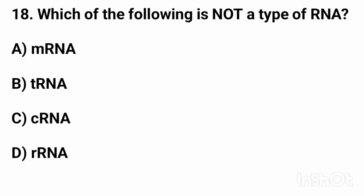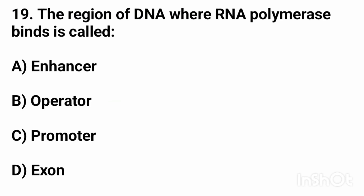Question number eighteen: which of the following is not a type of RNA? The right answer is option C, DNA. Question number nineteen: the region of DNA where RNA polymerase binds is called? The right answer is option C, the promoter.